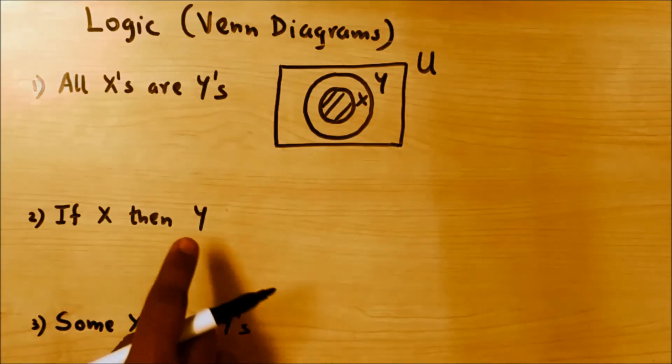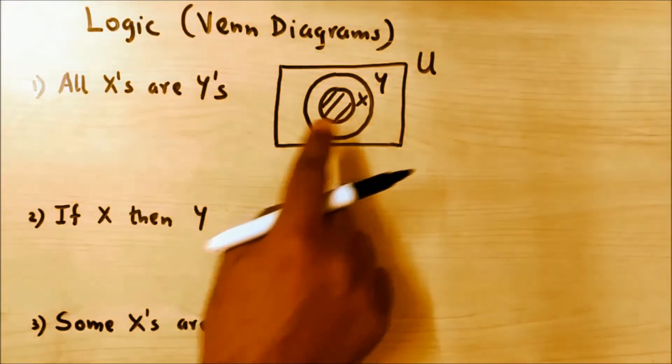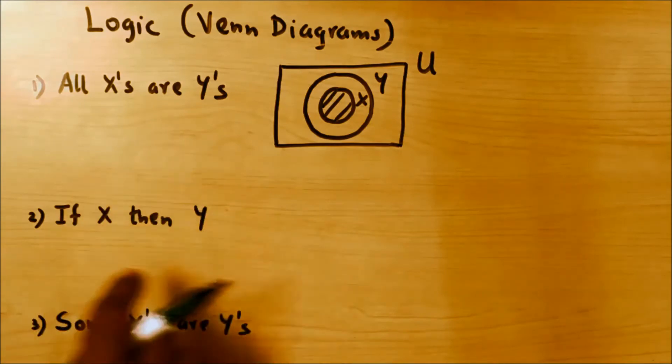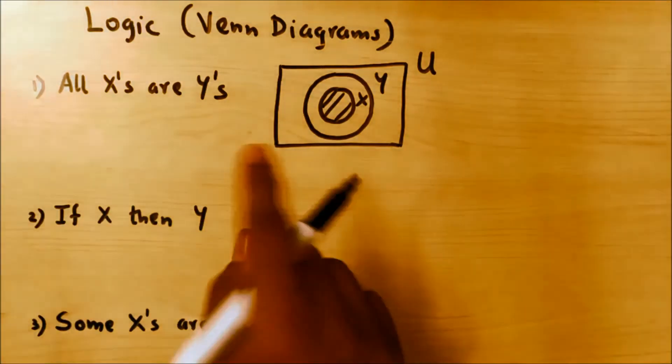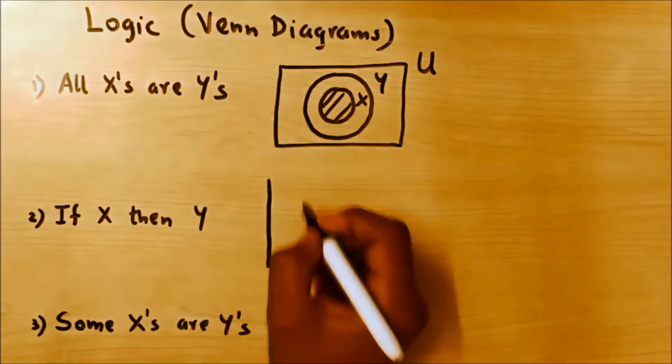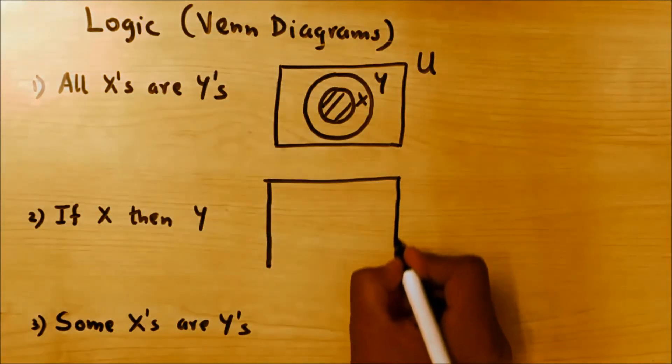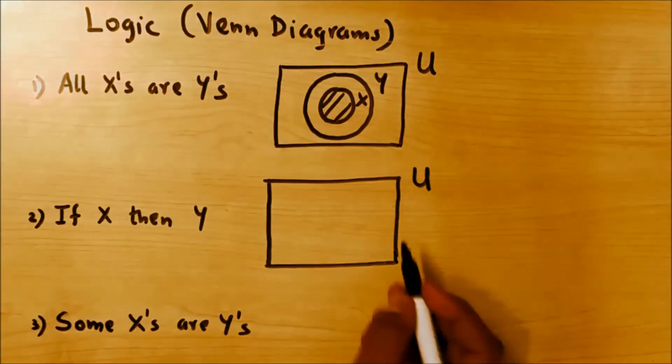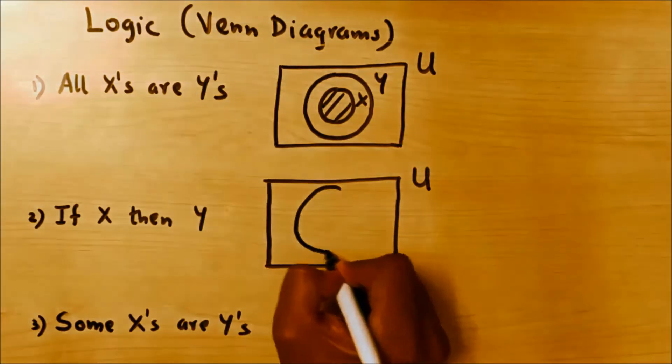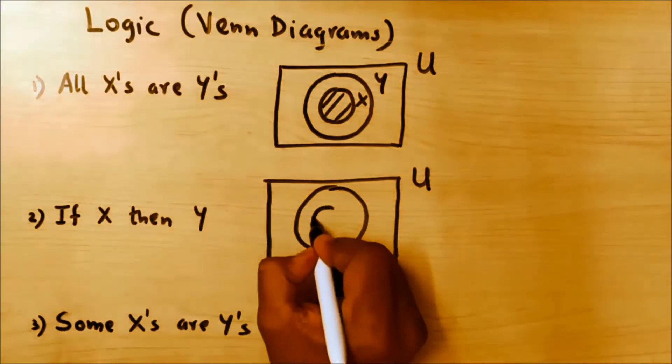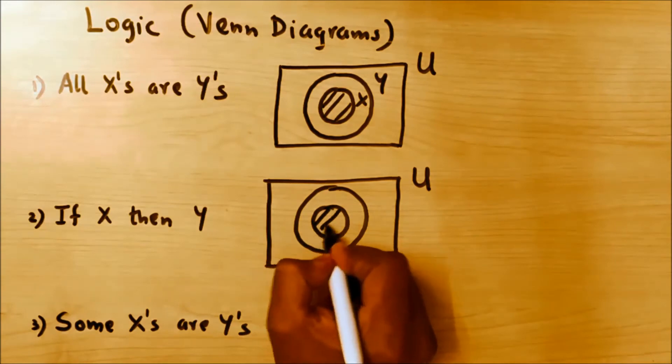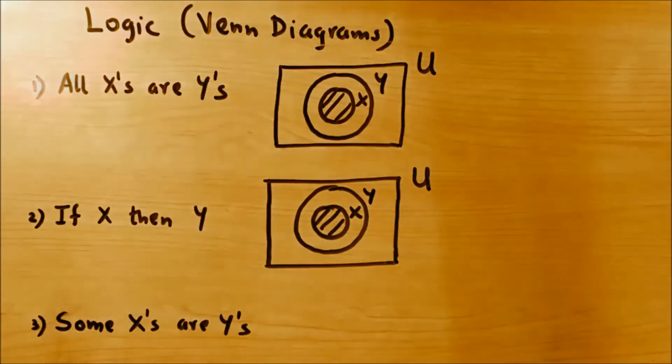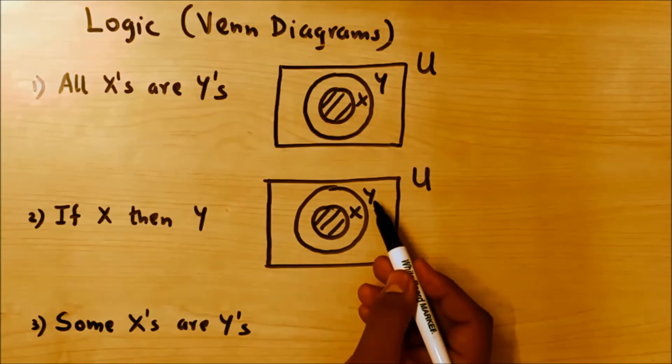Next is if X then Y. This diagram is exactly similar to this. The 'if' part would be inside and 'then' would be outside. Again you have the universal set, then the 'if' part will be inside—the 'if' part is X—and 'then' part outside, so Y. If X then Y.